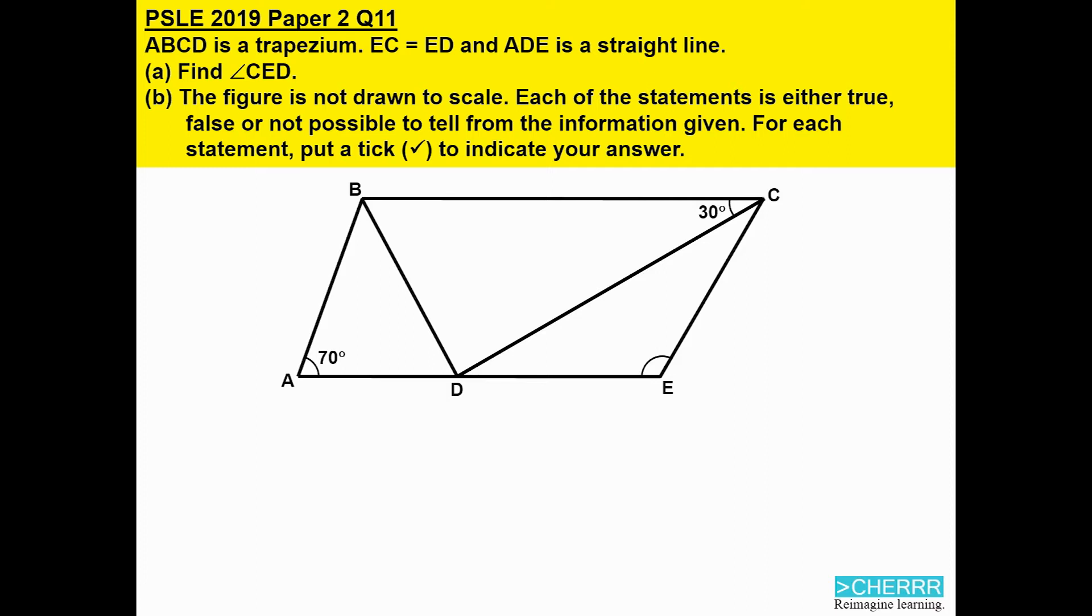Firstly, we need to find out where the parallel lines are for the trapezium. Out of the four lines, there's this pair AD and BC. These lines are parallel to each other.